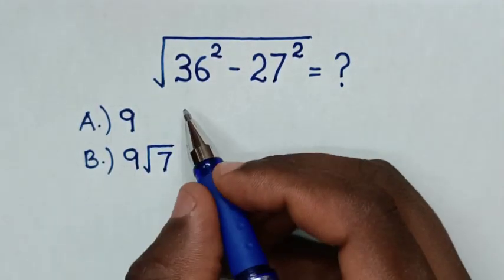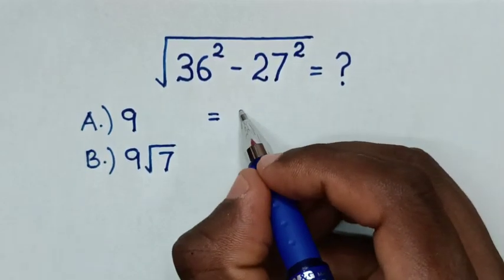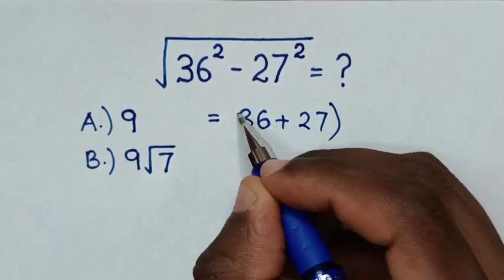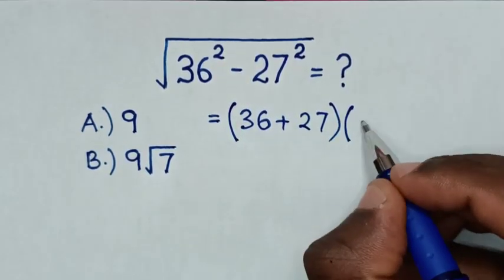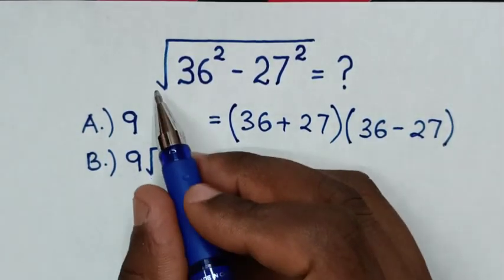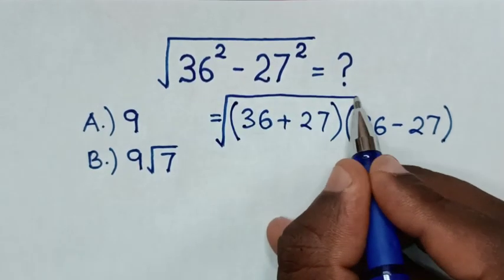So, this is equal to 36 square minus 27 square is same as 36 plus 27 bracket, then times bracket 36 minus 27 bracket. Then, this expression is under square root, so also this will be under square root.